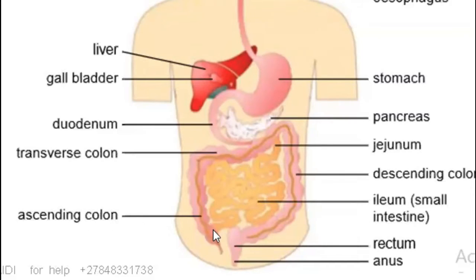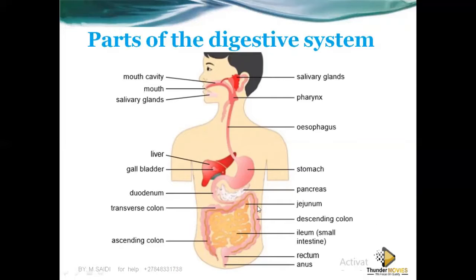This is ascending — we call it ascending because it is moving up. When the food comes, it starts to go up, so it is called the ascending colon. Then descending — we call it descending because it is moving down. When the food comes, it goes down, but it's still the colon or large intestine. Then it joins the jejunum, which is a small intestine. The duodenum is also a small intestine.